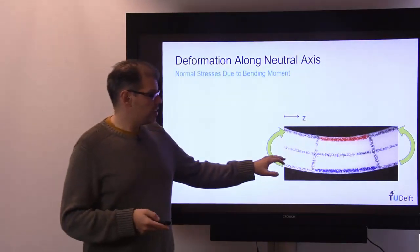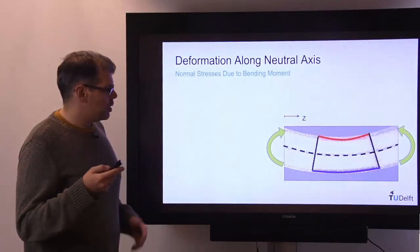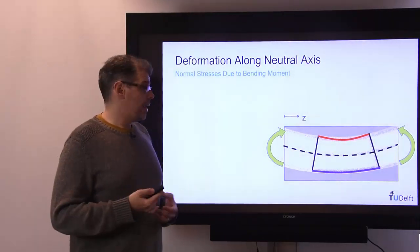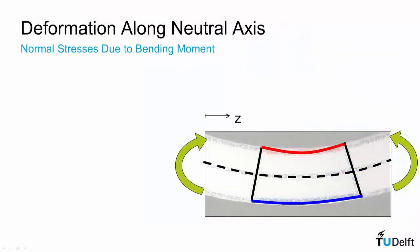So if we take our simple beam and replace it with a schematic of our blue fiber, our red fiber, and a dashed line for this fiber we will call the neutral axis where no deformation occurs.